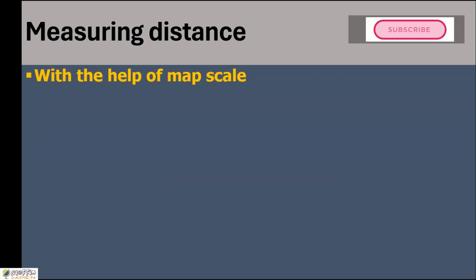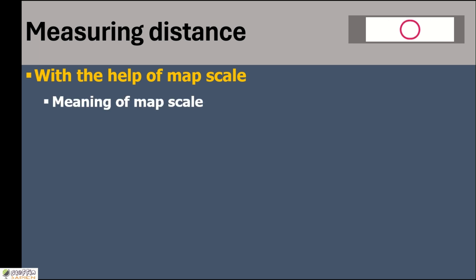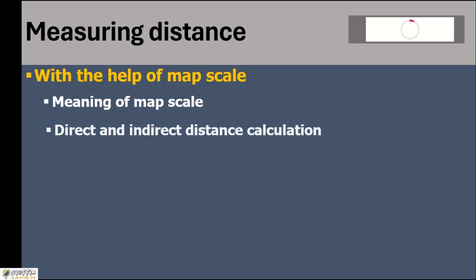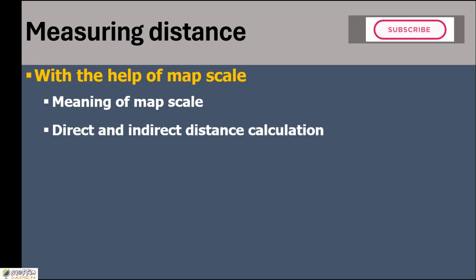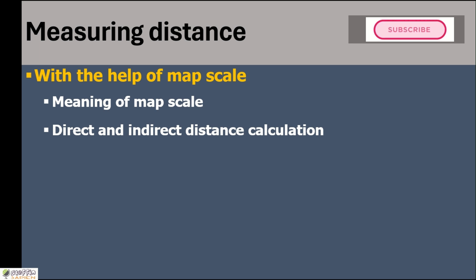Distance on map is measured with the help of map scale, which means we should be familiar with terms like map scale, the meaning of direct and indirect distances, the meaning of an area, and grid square.